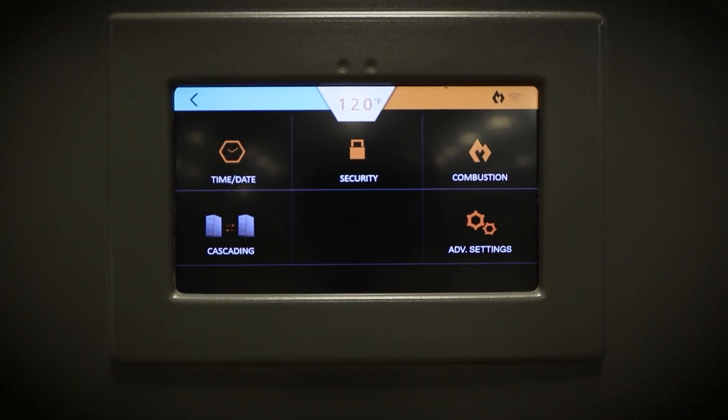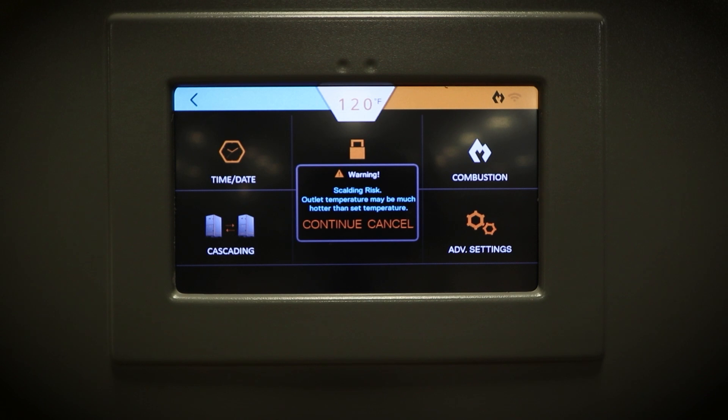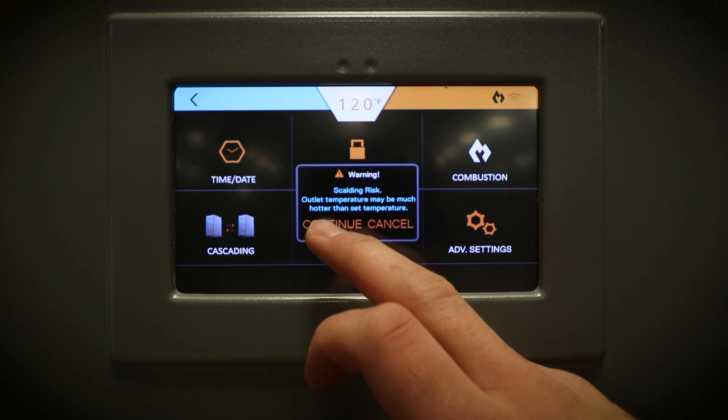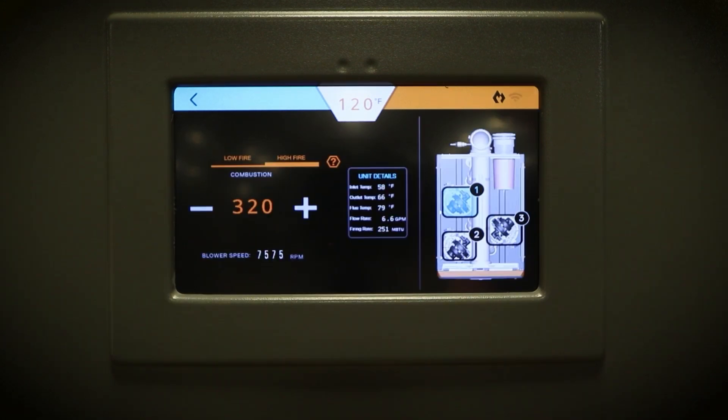To enter combustion mode, the unit will need to operate at its maximum firing rate. We will achieve this by increasing the demand of the heat exchanger. Please do the following: Calculate the difference in temperature between the unit set point and the incoming water temperature. This is our temperature delta.